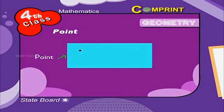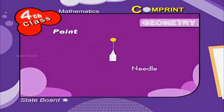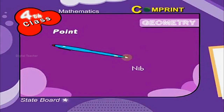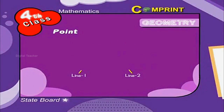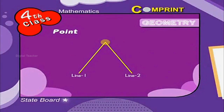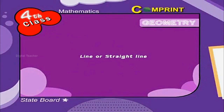A point is a dot represented on a plane surface. For example, tip of a needle, tip of a pen nib, tip of an arrow, etc. We can also say the meeting place of two lines is called a point.